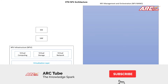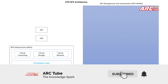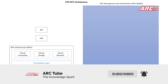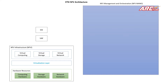From the virtualization layer, you get the virtual components of NFV — this includes virtual computing, virtual storage, and virtual network. The physical hardware is the only physical component in this entire NFV architecture. Everything else — the hypervisor and all virtual components (virtual compute, virtual storage, and virtual network) — are software or virtual components.